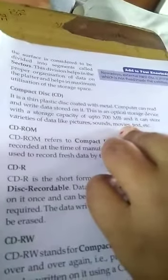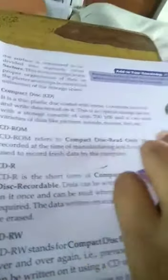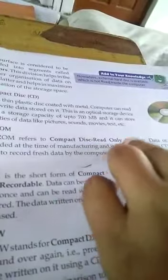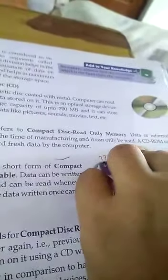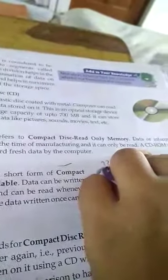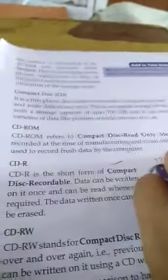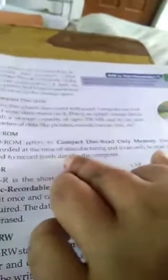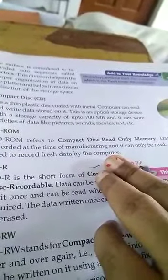CD-ROM refers to Compact Disc Read-Only Memory. Data or instruction is recorded at the time of manufacturing and it can only be read. CD-ROM cannot be used to record fresh data by the computer.